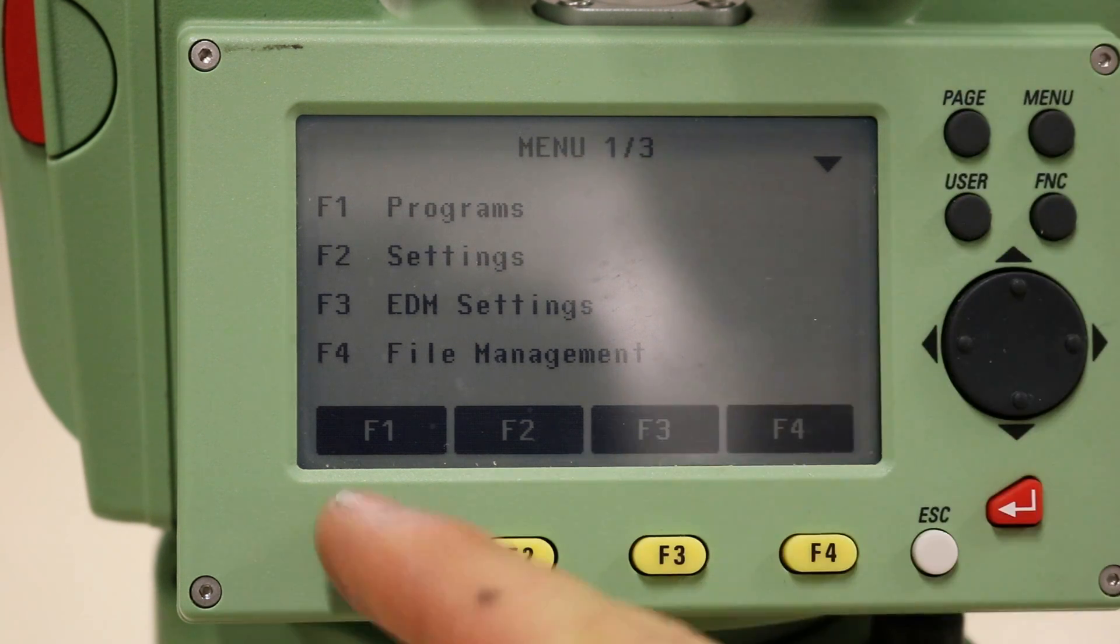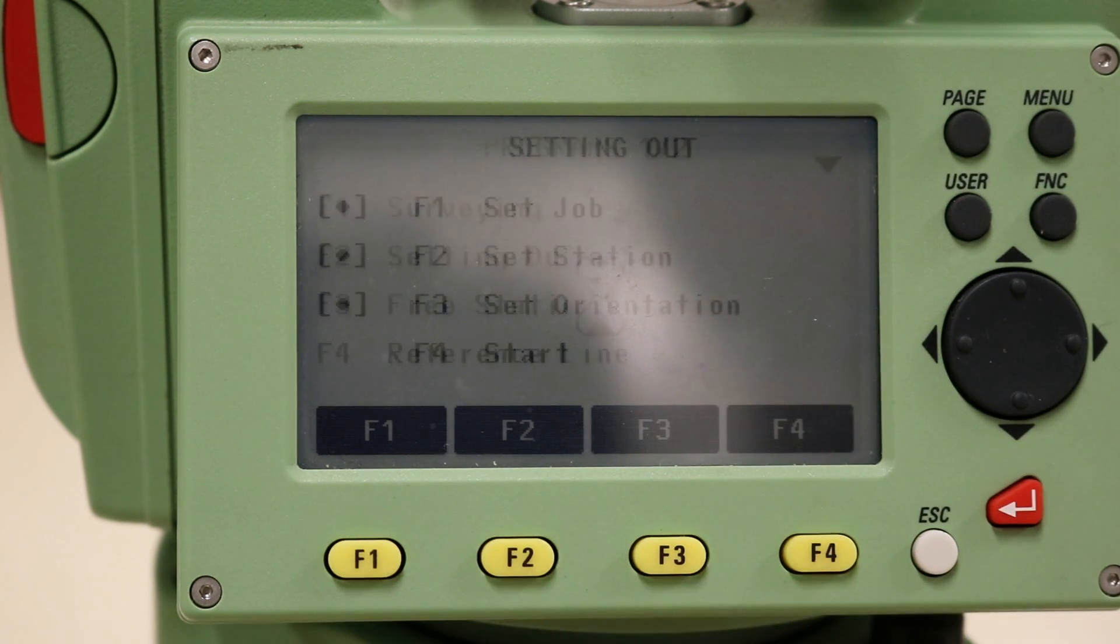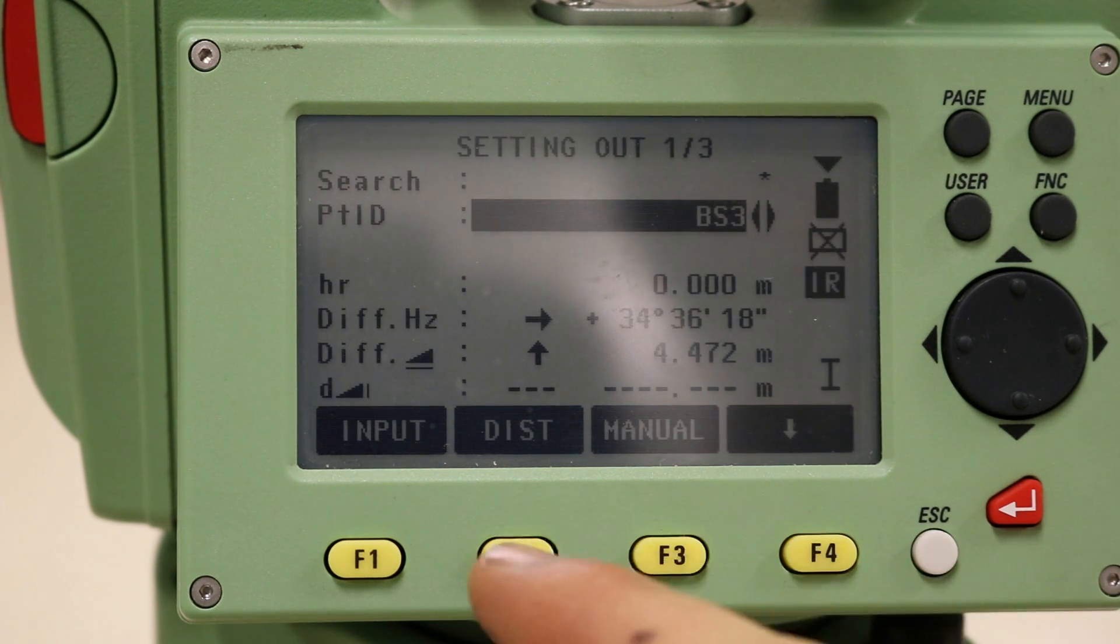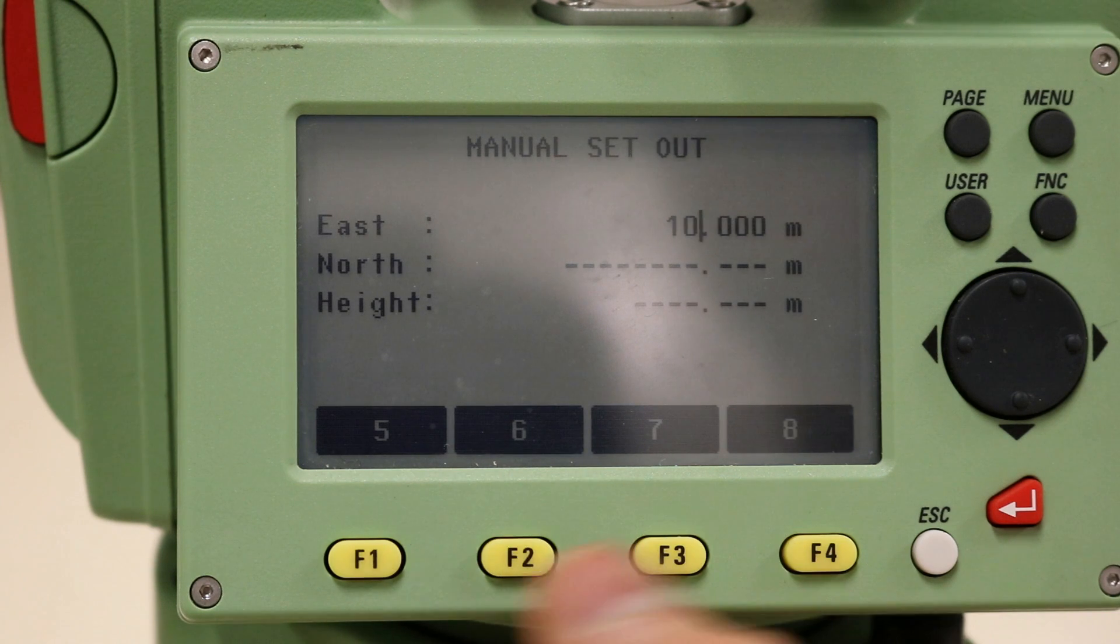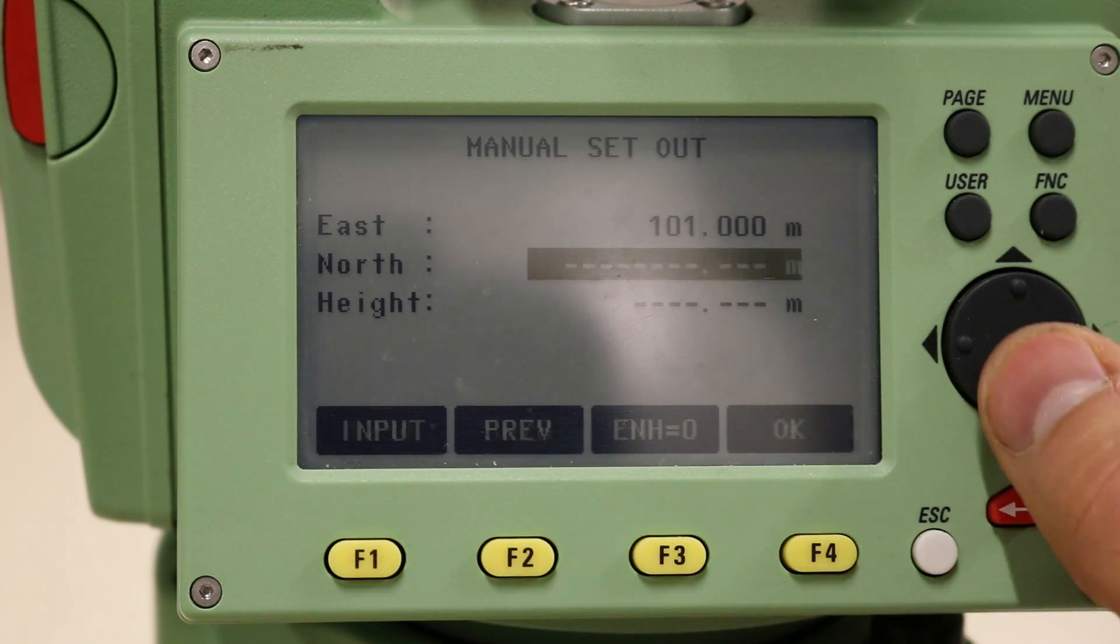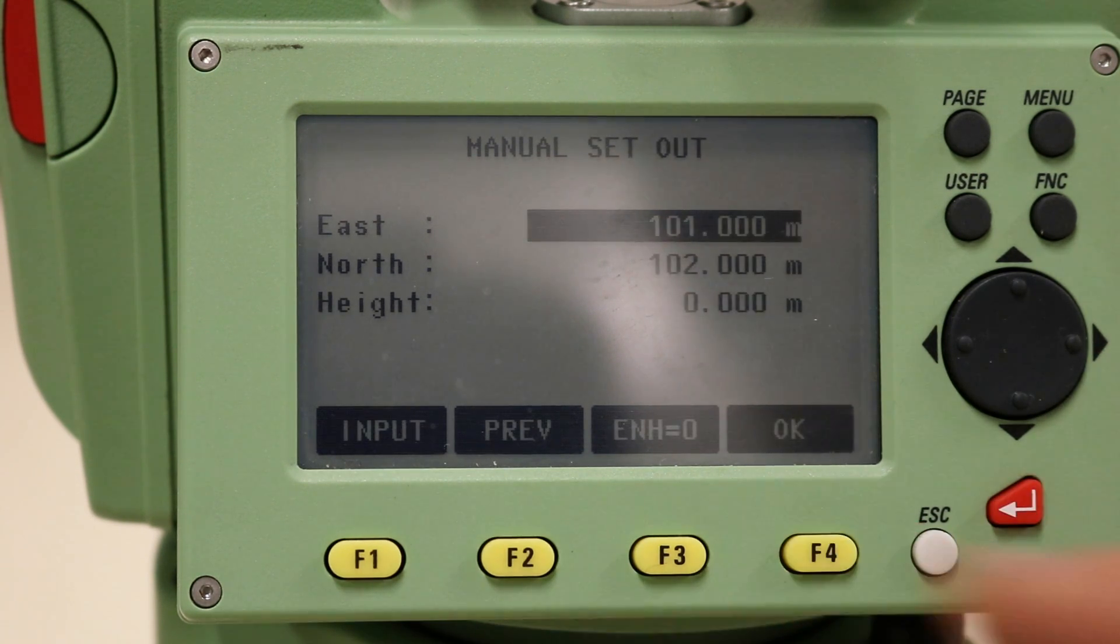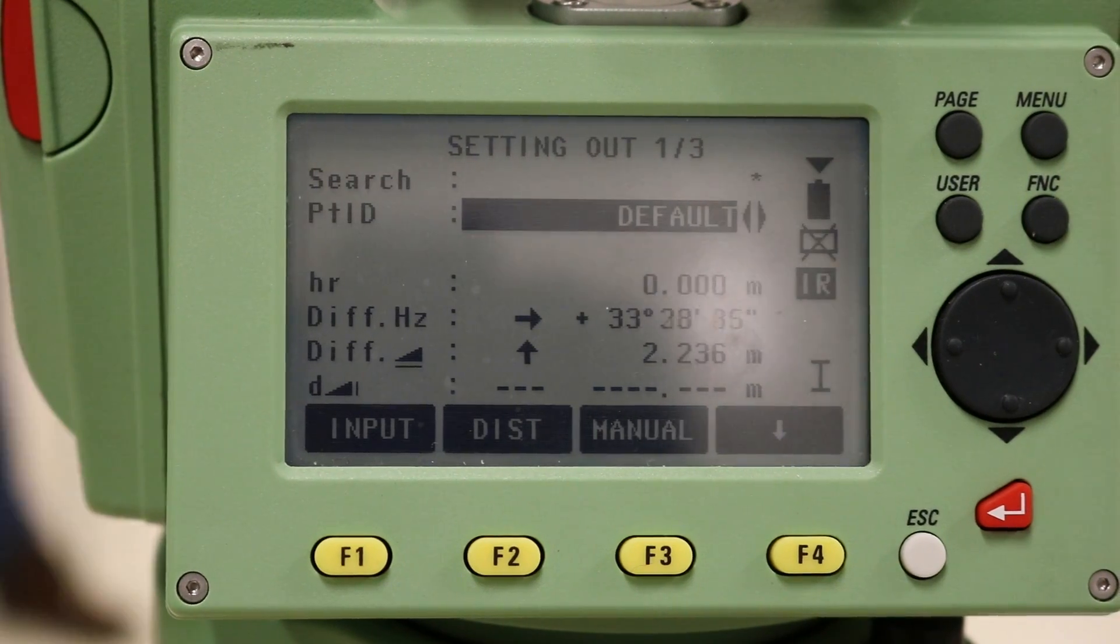Firstly, enter the setting out mode by selecting it from the programs menu. Press the start button to begin setting out. You can either set out points that you enter the coordinates of manually, or you can have the coordinates automatically inputted from AutoCAD files. For this example, I will enter the coordinates manually as shown.